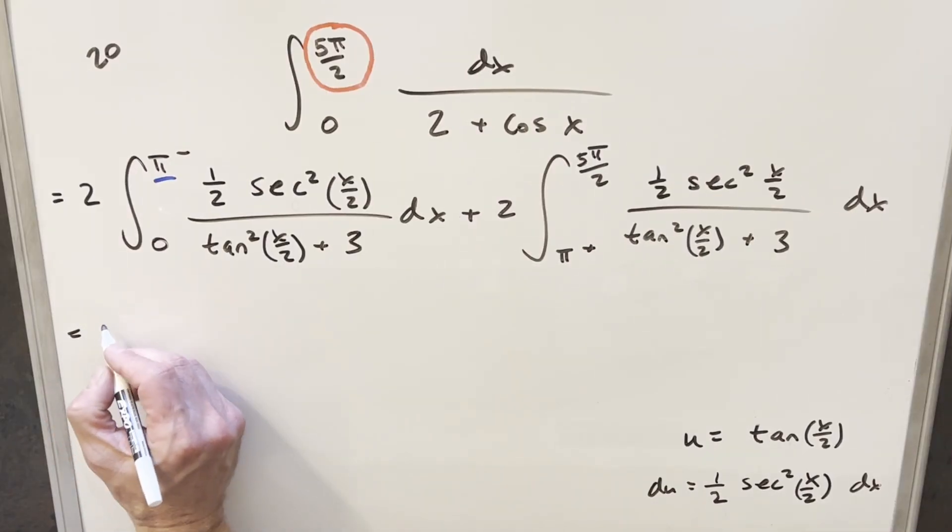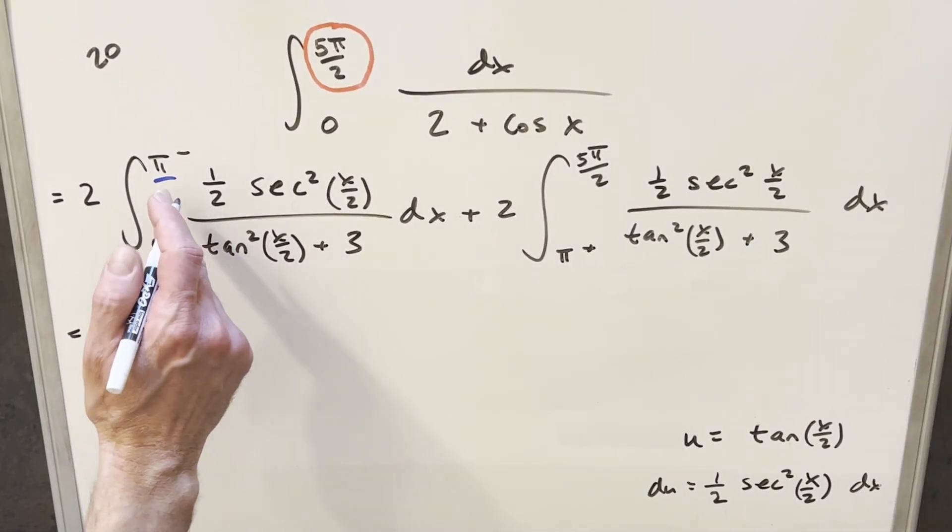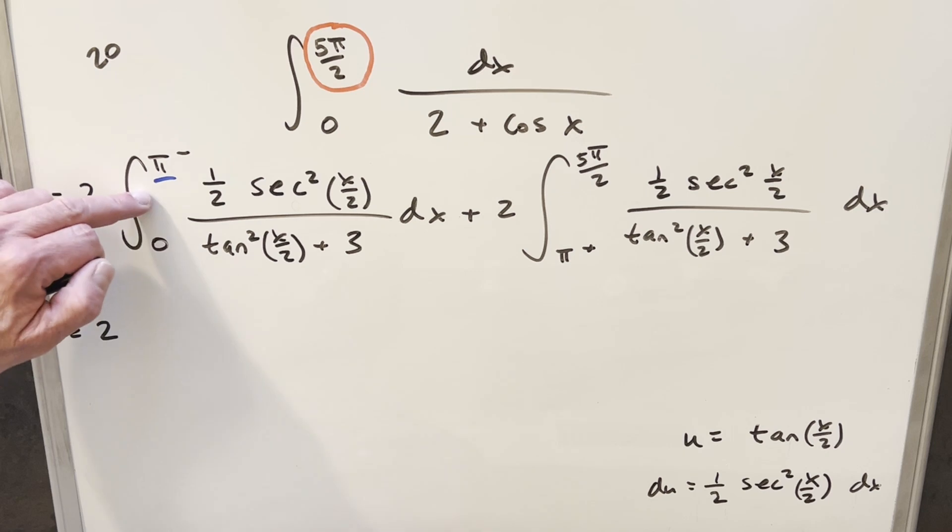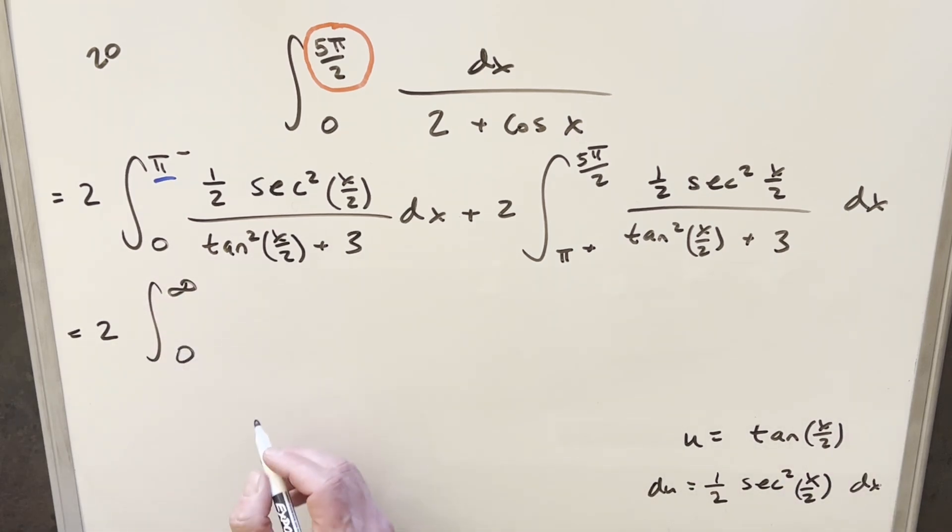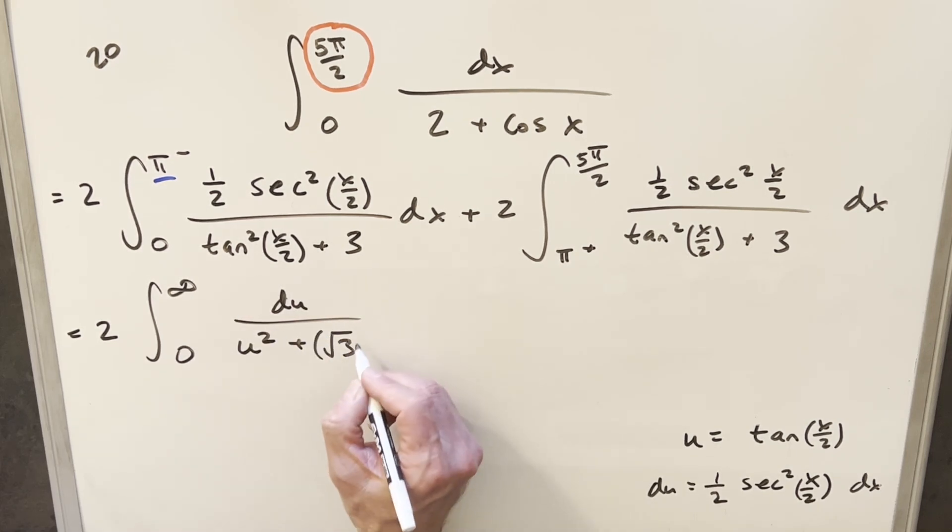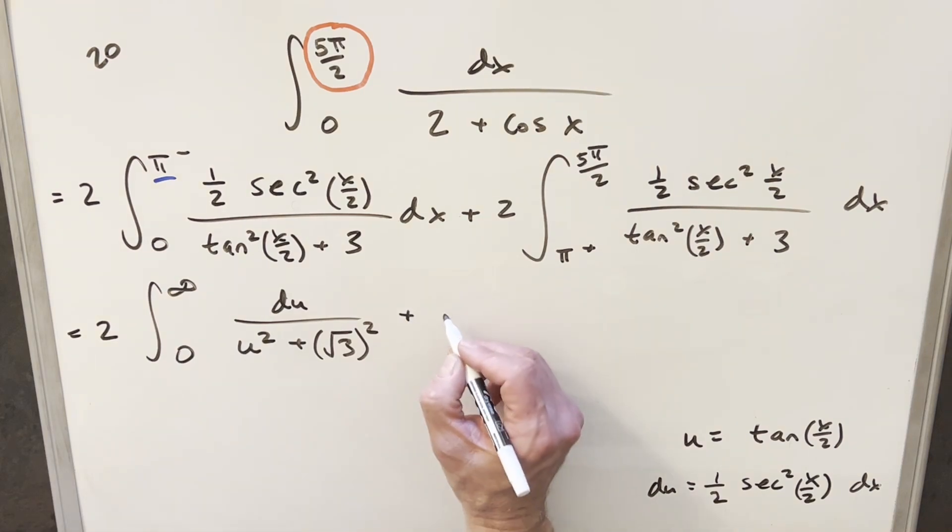So first, we'll come over here and we'll just update our bounds using this one, plugging in π minus. This is our normal situation if it's just like π. When we plug π in here, tan π over 2 for that bound, we're going to have infinity. And then plugging in 0, tan at 0 is just 0. Then this numerator is just going to be our du value. This here is going to become u squared plus 3, but I'm going to write it as square root of 3 squared.